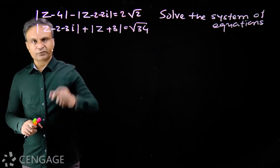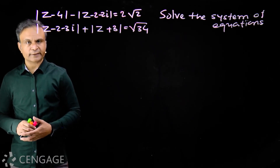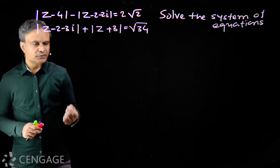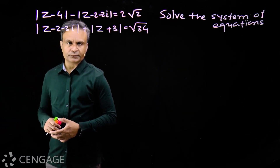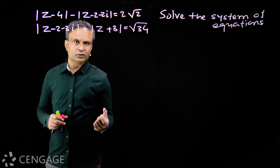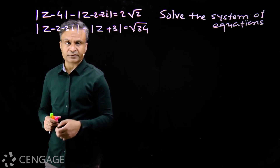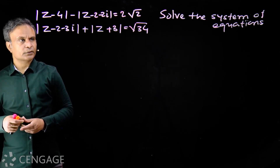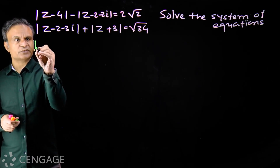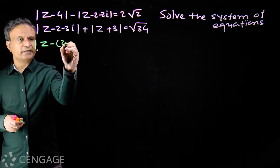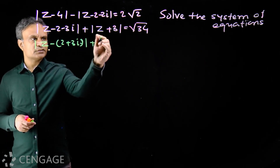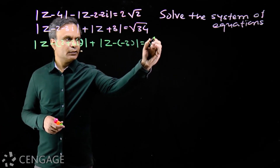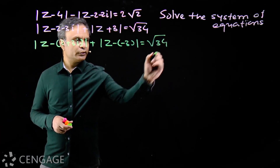Let's solve this new system of equations. We have two equations and we need to identify the locus each equation represents. Consider the first equation: it involves the distance between complex numbers z and 2 plus 3i, and the distance between complex numbers z and minus 3. This sum is equal to root 34.